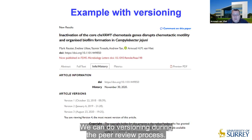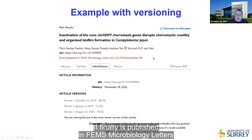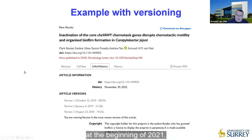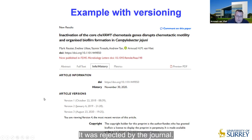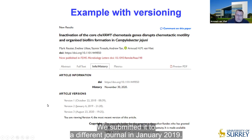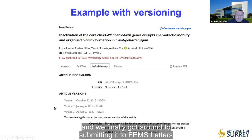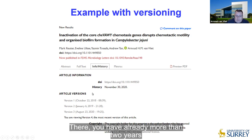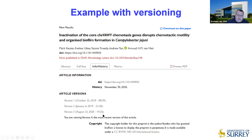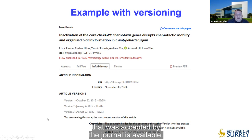You can do versioning during the peer review process. Here is one of my own papers — the first preprint I did — which was finally published in FEMS Microbiology Letters at the beginning of 2021, but the first submission to a journal was in 2018. It was rejected, we submitted to a different journal in January 2019, that journal rejected it as well, it stayed on the shelf for a while, and we finally submitted to FEMS Letters in August 2020. So there were more than two years between original submission and final publication. The prior versions are still available on the preprint server, along with the final accepted version.